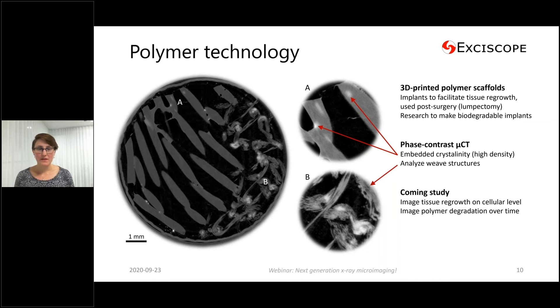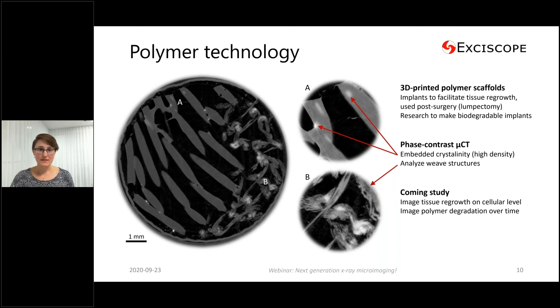They also found that this micro-CT study was a good way of analyzing the weave structures. In coming studies, they plan to image the tissue growth down to single cells and see the polymer degradation.